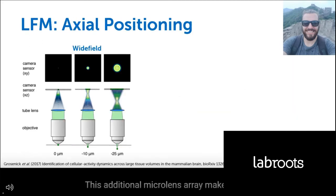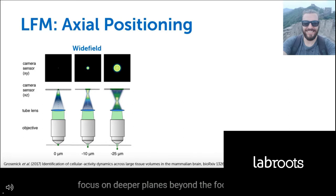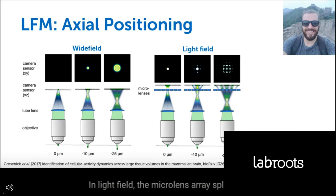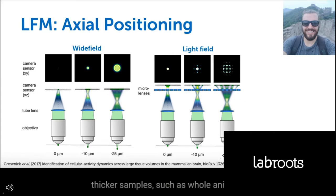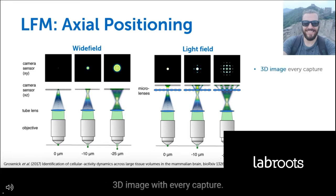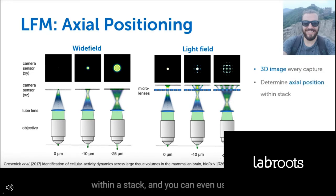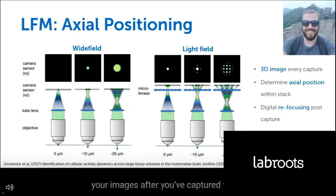With light field microscopy, there's an additional microlens array before the light hits the camera sensor, meaning light from a single point on the sample can now be directed to different points on the camera. This allows users to capture more of the 4D light field from the sample on either side of the focal plane by splitting it onto different pixels. In wide field, defocused planes appear as blobs. In light field, the microlens array splits the light into distinctive non-overlapping patterns from different focal planes. This is very useful for imaging thicker samples such as whole animals, tissues, or organs like the brain. With light field, you get a 3D image with every capture, can determine axial position within a stack, and can digitally refocus images after capture.